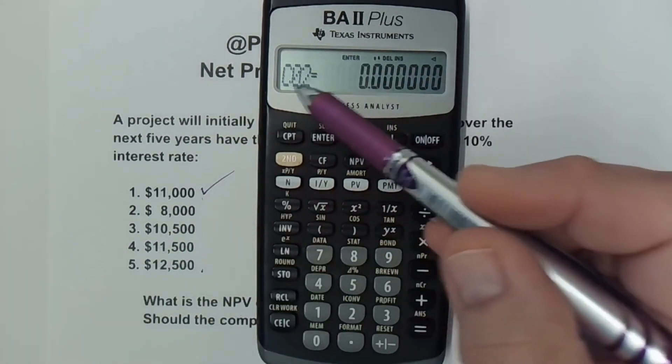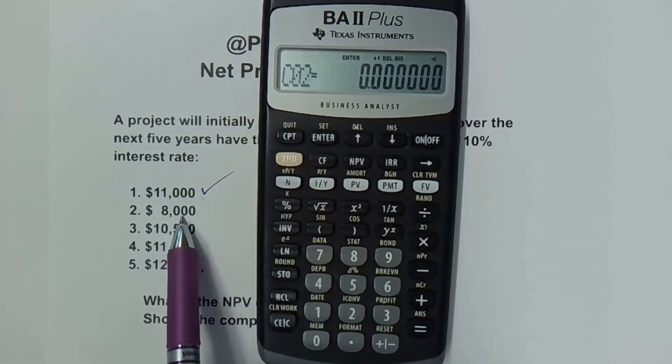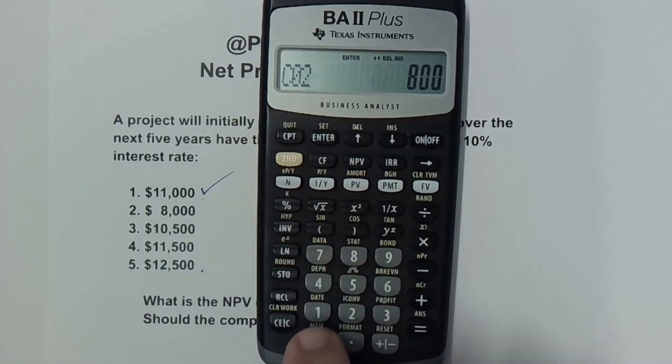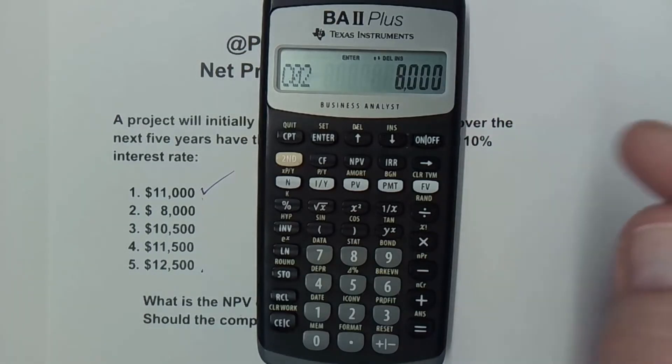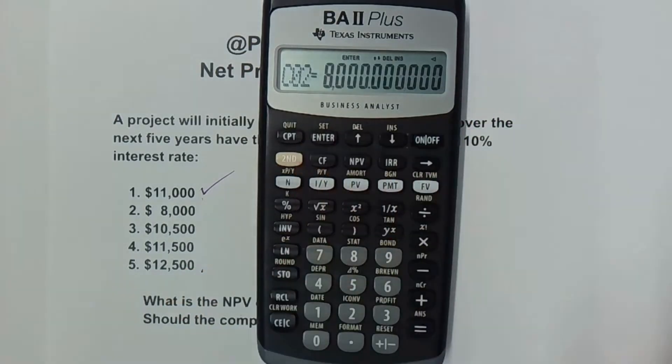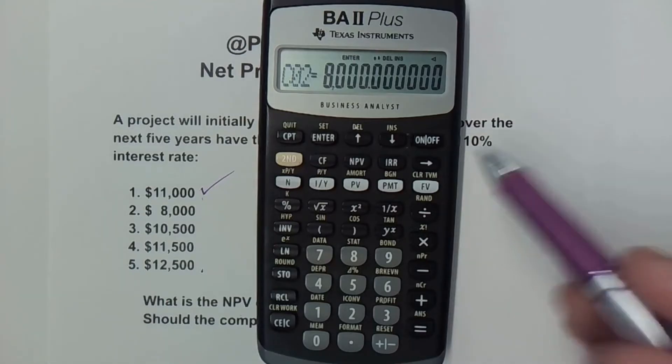I hit the down arrow. We have cash flow 2. We're going to have a positive cash flow of $8,000. These cash flows are positive because they are coming into the company. So I've entered 8,000. I hit enter and we've got cash flow 2 done.